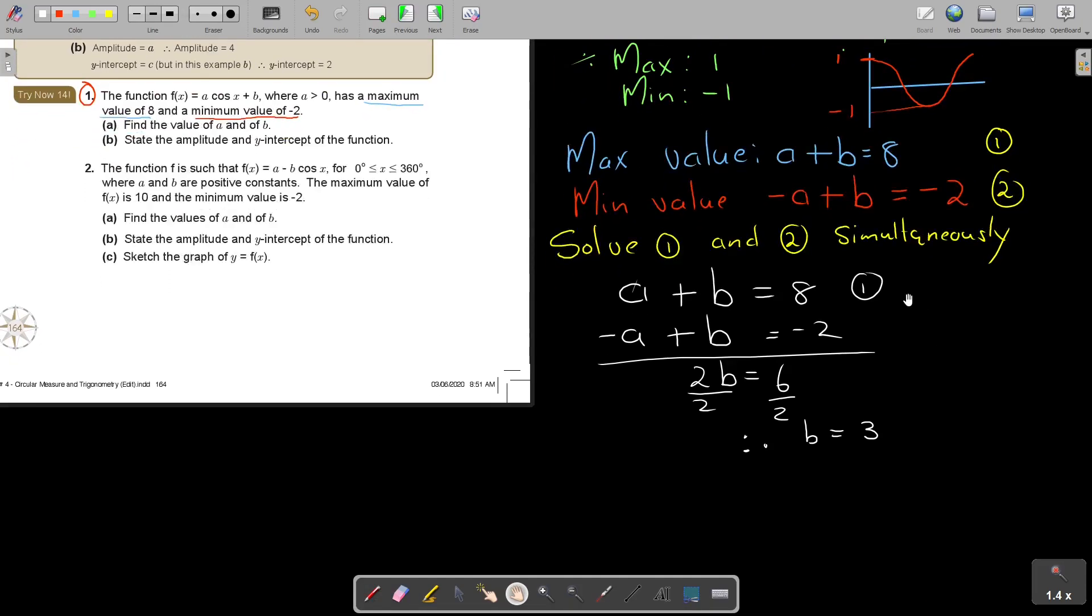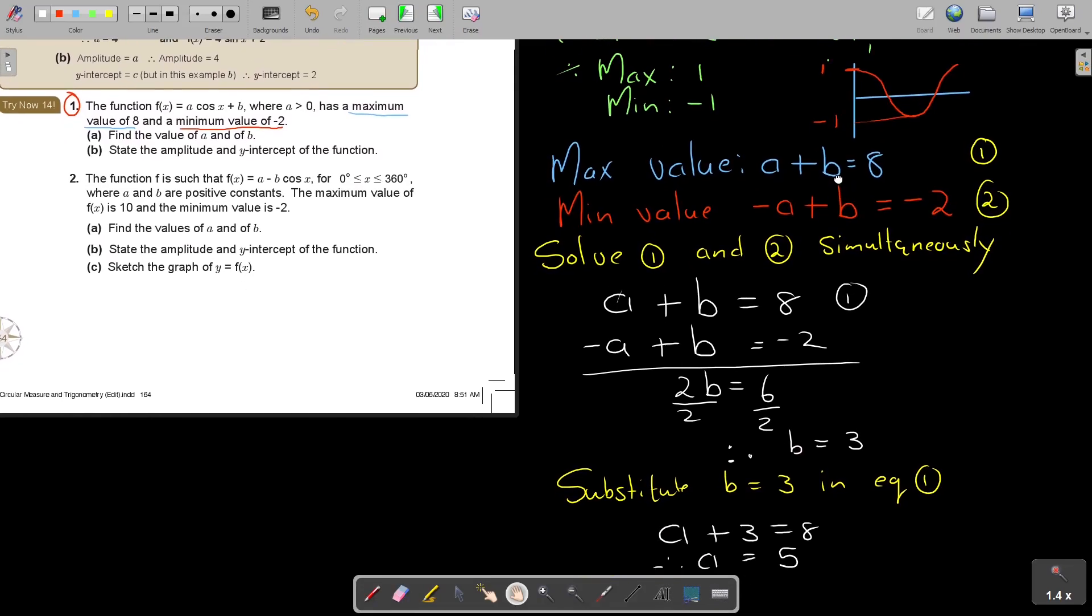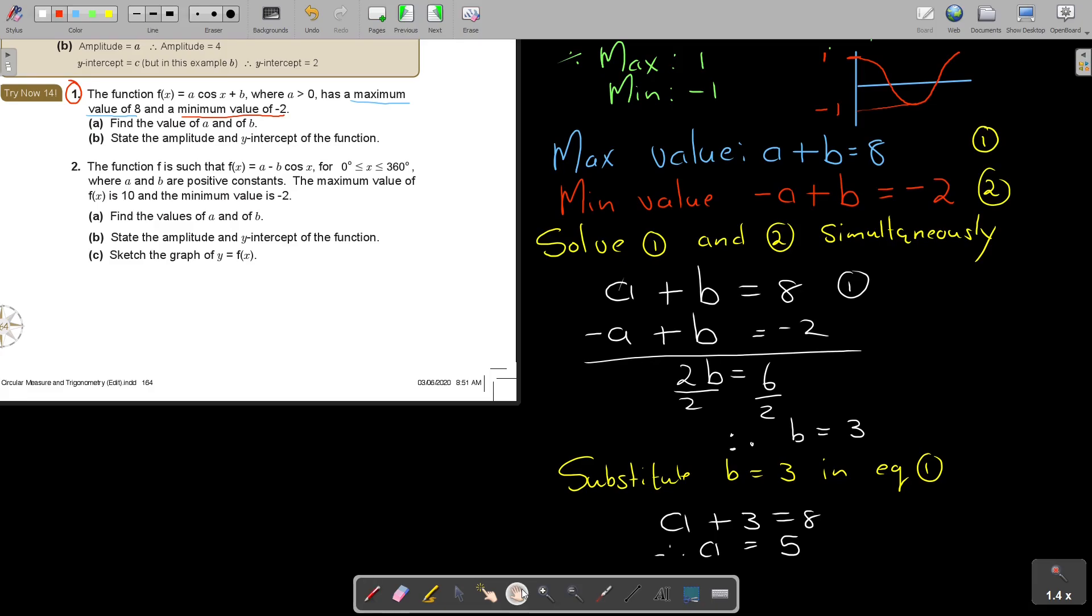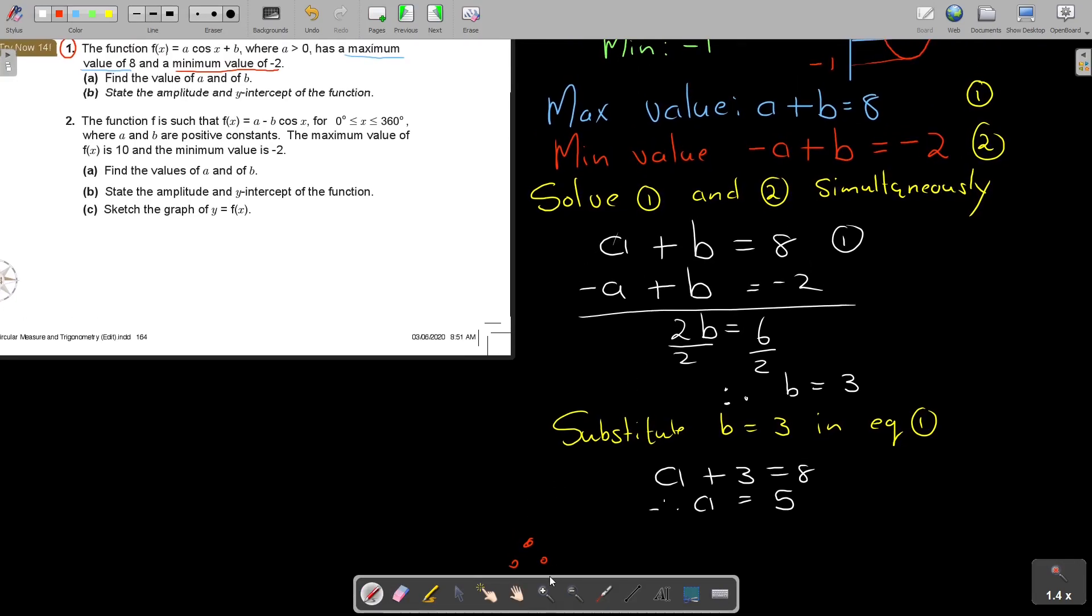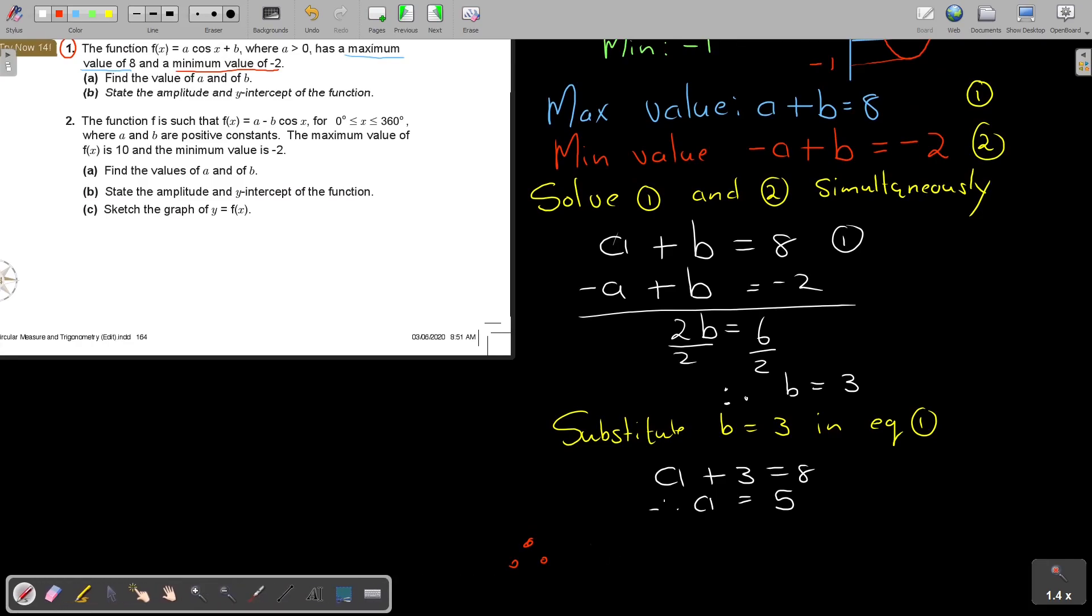b equals 3 in equation 1. So that's going to be a plus 3 equals 8. Therefore a is equal to 5. Now if I go back, I can actually use this one. Let me put this up a little bit. So fx is equal, and in the place of a I put 5 cos x and in the place of b I put 3. So that is now the function.